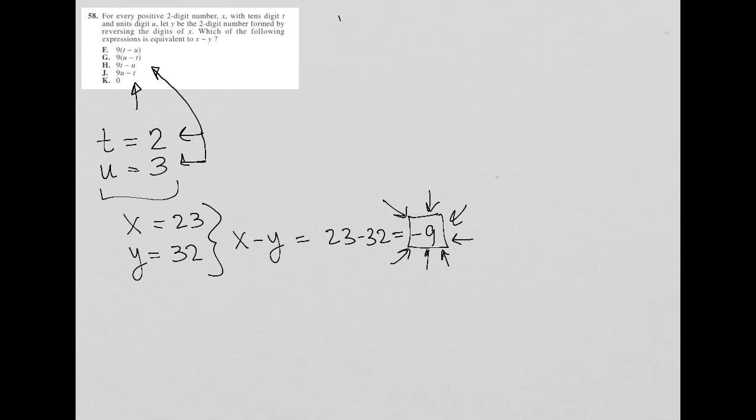For choice F, it says nine times T minus U. So my T is two, my U is three. Two minus three is negative one. Nine times negative one is negative nine. And that is exactly right what I got here. So I'm pretty sure that choice F is the correct answer.